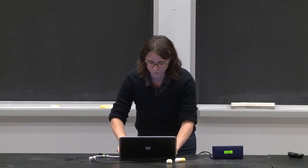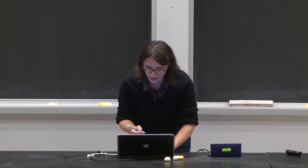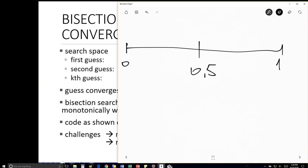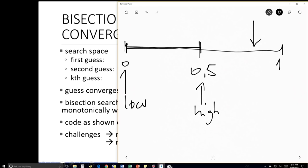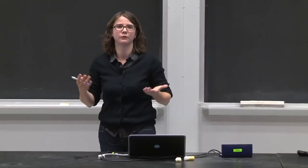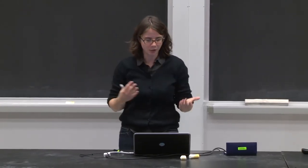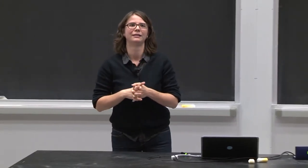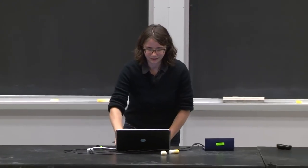One last note: the code as shown only works for positive cubes greater than 1. For example, trying to find the cube root of 0.5 fails because the actual answer (~0.79) lies outside the initial [0, 0.5] boundary. A small if-statement fix in the code handles this edge case. That's it for today.